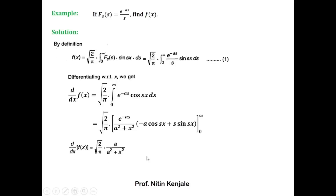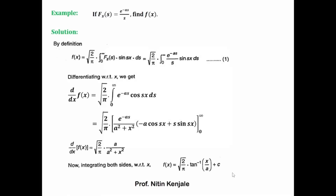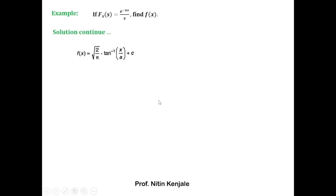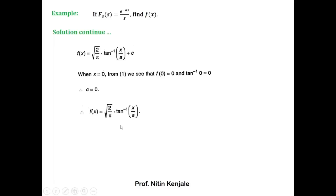To find f(x) from this equation we integrate both sides with respect to x. The left-hand side gives f(x), and the right-hand side gives root(2/π) × tan⁻¹(x/a) + c. To find the constant c, we put x = 0: f(0) = root(2/π) × tan⁻¹(0) + c. Since tan⁻¹(0) = 0 and f(0) tends to 0 from equation one, we get c = 0. Therefore, f(x) = root(2/π) × tan⁻¹(x/a). This is the inverse Fourier sine transform of F_ss.